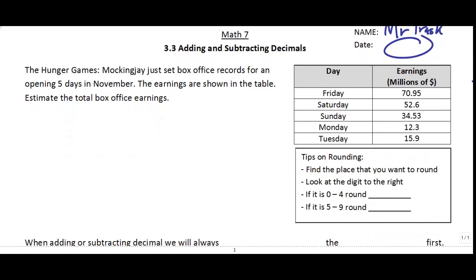So our first example here, the Hunger Games Mockingjay just set a box office record for opening five days in November. The earnings are shown over here on the side table. The first thing we want to do is we're going to estimate the total box office earnings. Our estimation basically is just a ballpark. It's going to get us close to the real answer and it just gives us an idea when we find the total correct answer, how close we actually are.